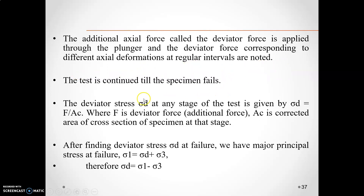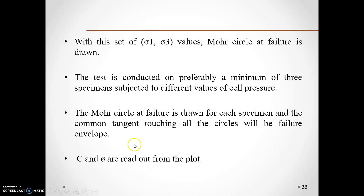An additional axial force, called the deviator force, is also applied through the plunger. The deviator force and corresponding axial deformations at regular intervals are noted. The test continues until the specimen fails. The deviator stress sigma-d at any stage is given by: sigma-d equals F divided by Ac, where F is the deviator force and Ac is the corrected area of cross-section. Therefore, sigma-1 equals sigma-d plus sigma-3, and sigma-d equals sigma-1 minus sigma-3. With the set of sigma-1 and sigma-3 at failure, a Mohr circle can be drawn.